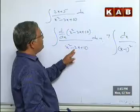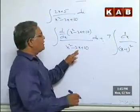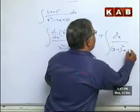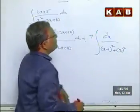So x square will come minus 2x will come plus 1 will come. How much will be left over? 10 will be left over. 10 means 3 square. 3 square.